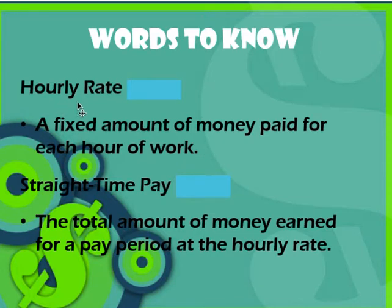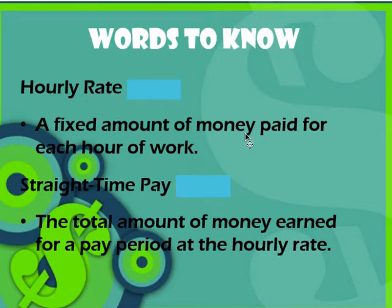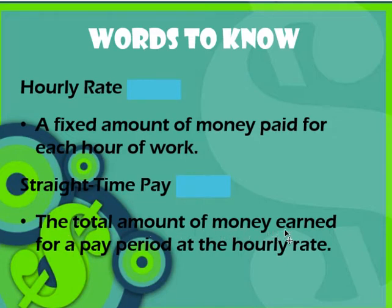Let's first talk about some language. The first vocabulary term is hourly rate — a fixed amount of money paid for each hour of work. If you're in my consumer math class, you should be putting these vocabulary terms into your notebooks. The second term I need you to understand is straight time pay. This is how we calculate your actual pay. Straight time pay is the total amount of money earned for a pay period at the hourly rate. Pause this if you need to write those terms down.